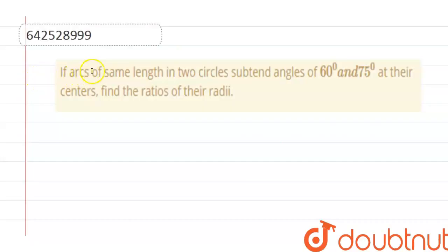In this question, we are given that there are two arcs of the same length in two circles which subtend angles of 60 degrees and 75 degrees at their centers, and we have to find the ratios of their radii.